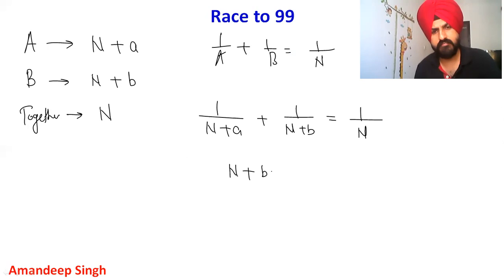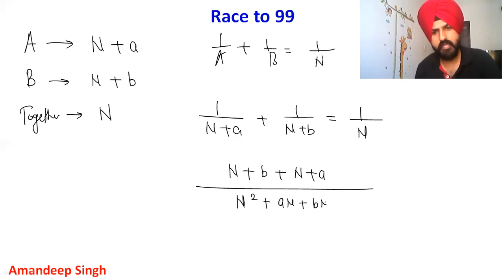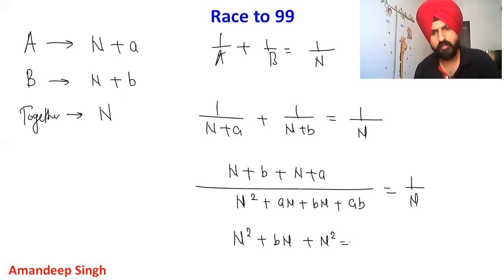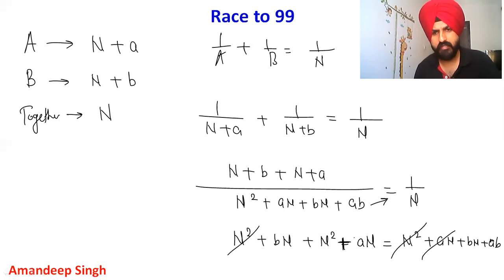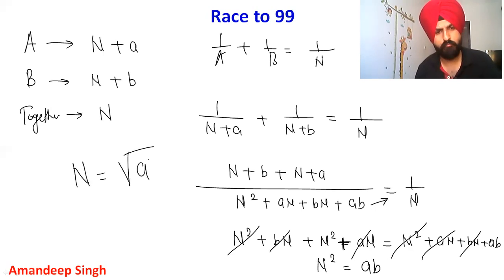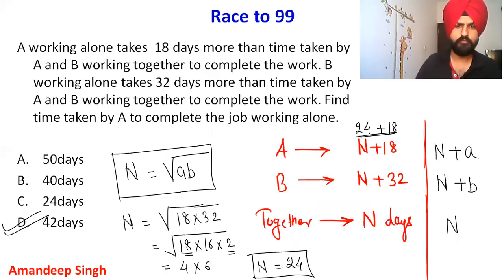Using the basic formula: 1/(N+a) + 1/(N+b) = 1/N. Simplifying the left side: (N+b + N+a) / [(N+a)(N+b)] = 1/N, giving numerator (2N + a + b) over denominator (N² + aN + bN + ab). Cross-multiplying: N(2N + a + b) = N² + aN + bN + ab, so 2N² + aN + bN = N² + aN + bN + ab. The N², aN, and bN terms cancel, leaving N² = ab, therefore N = √(ab). This is the derivation of the formula, and the answer is 42.